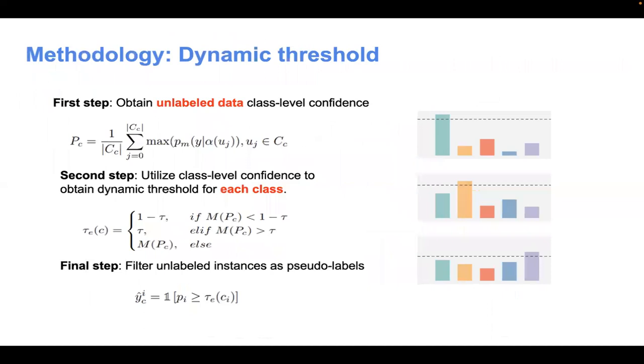The first part is the dynamic threshold. First, we obtain unlabeled data class-level confidence. Then, we use the class-level confidence to obtain dynamic threshold for each class. Finally, we use the dynamic threshold to filter unlabeled data instances as pseudo-labels.